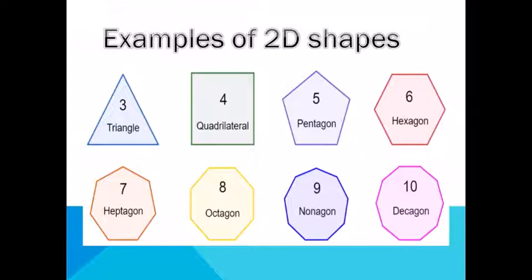Hexagon has 6 sides and 6 angles. Heptagon has 7 sides and 7 angles. Octagon has 8 sides and 8 angles. Nonagon has 9 sides and 9 angles. And decagon has 10 sides and 10 angles.